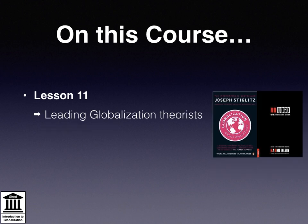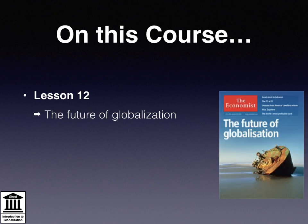Lesson 11 examines globalisation more specifically through an academic filter, considering some of the more important and influential globalisation theorists, including well-known writers and thinkers such as Joseph Stiglitz and Naomi Klein. Lesson 12 will look at the different perspectives about where globalisation goes now — will globalisation continue to thicken and become more entrenched, or will we witness a period of deglobalisation, as some argue?